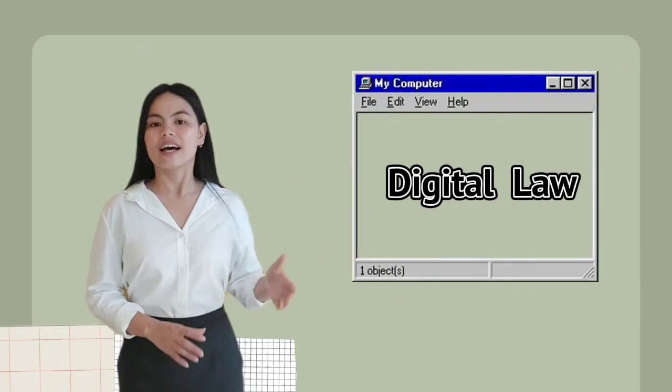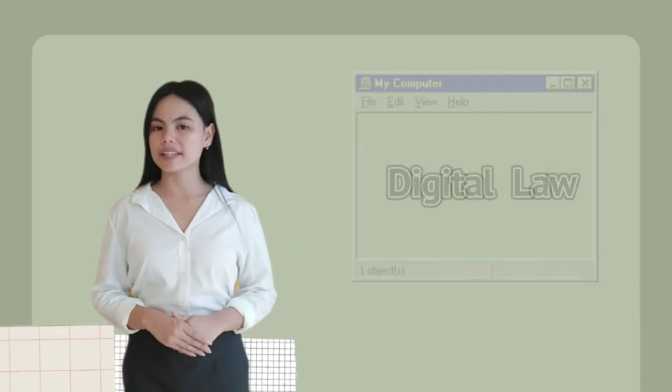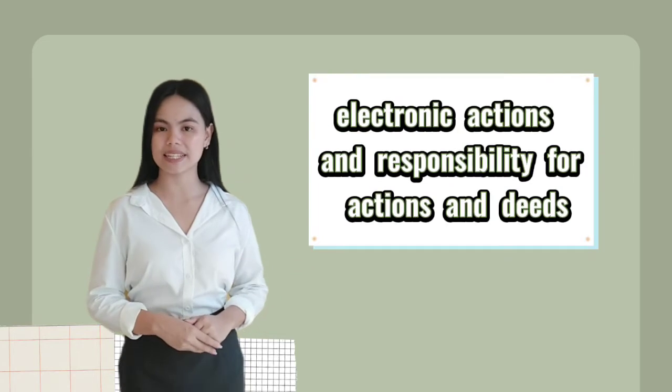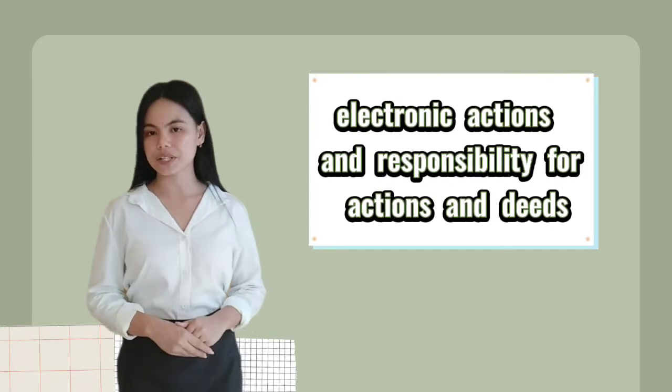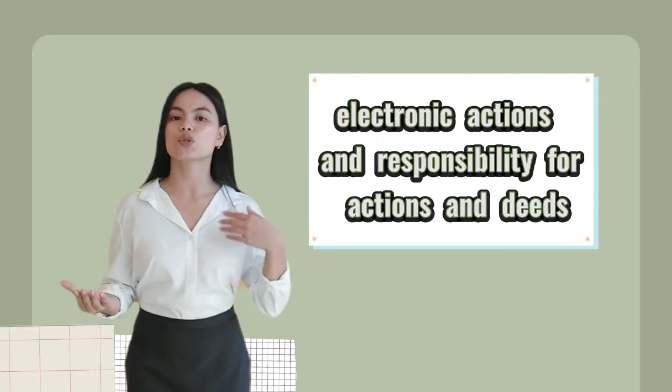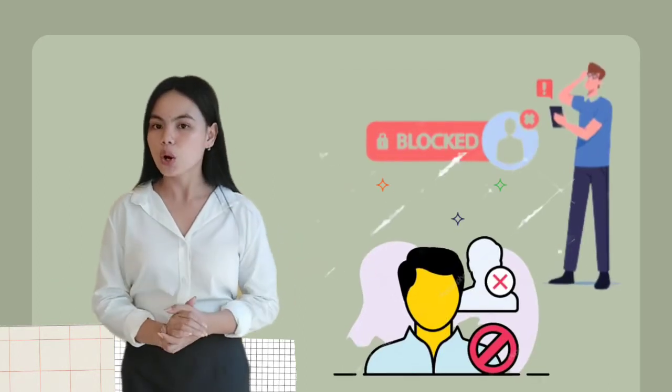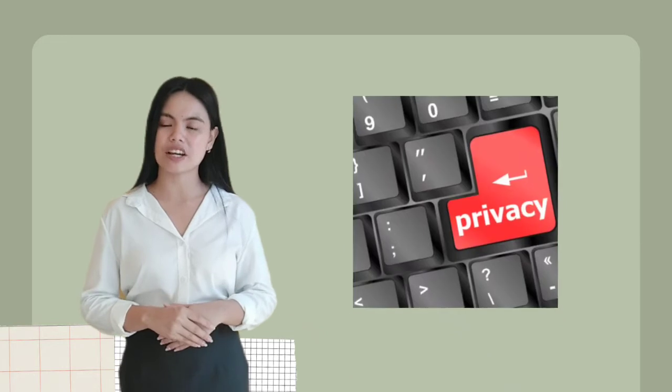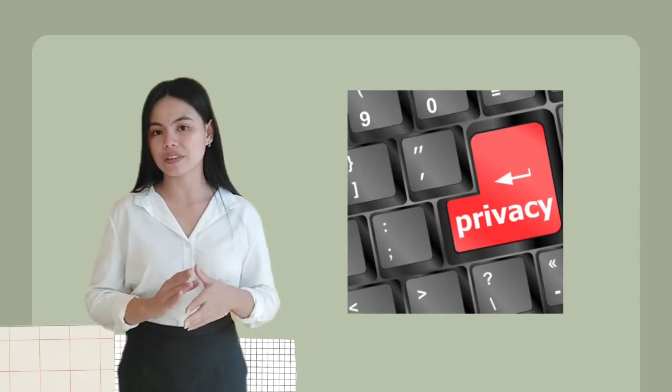Number eight is digital law. Digital law is defined as electronic responsibility for actions and needs. In other words, digital law refers to what you are and are not allowed to do while using the internet. We must keep in mind that we need to understand how to use and share music, photos, and movies legally. Second, create original works that are free from plagiarism and respect the privacy of others and the integrity of networks in terms of passwords and data.